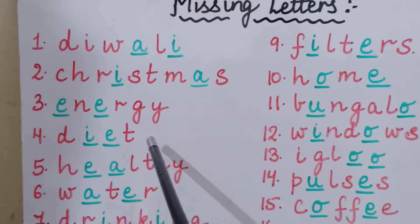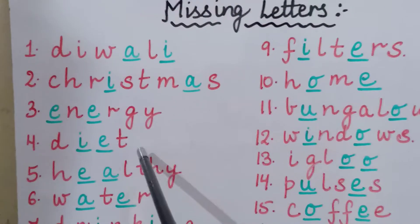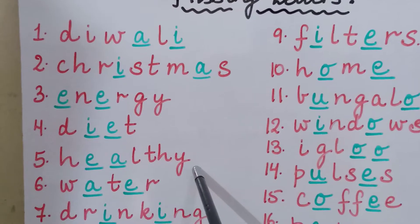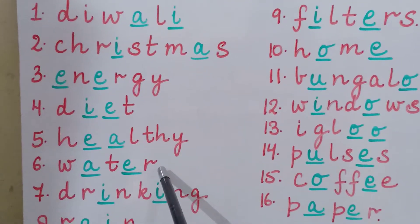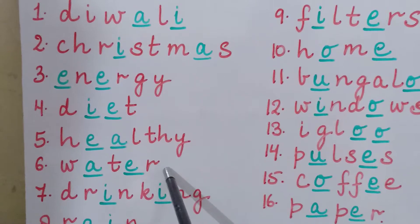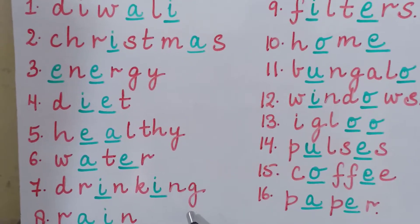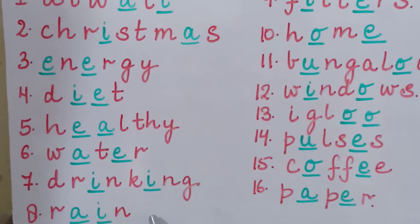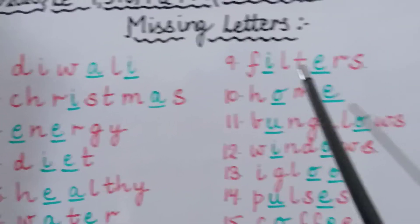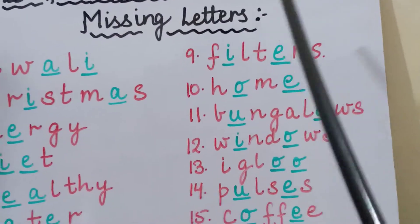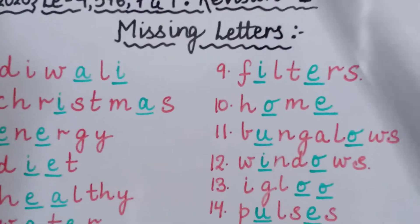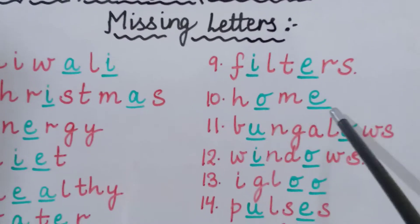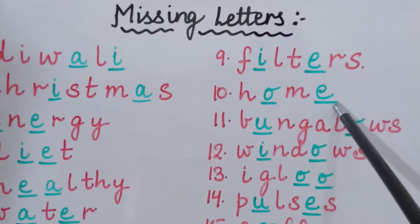The fourth word is D-I-E-T, Diet. Fifth word is H-E-A-L-T-H-Y, Healthy. Sixth word is W-A-T-E-R, Water. Seventh word is D-R-I-N-K-I-N-G, Drinking. Eighth word is R-A-I-N, Rain. The ninth word is F-I-L-T-E-R-S, Filters. Tenth word is H-O-M-E, Home.